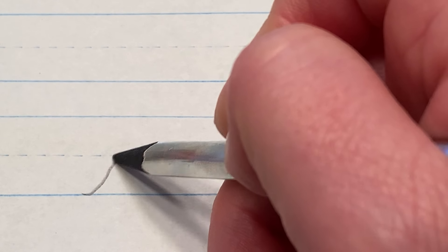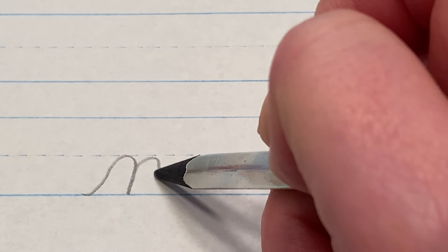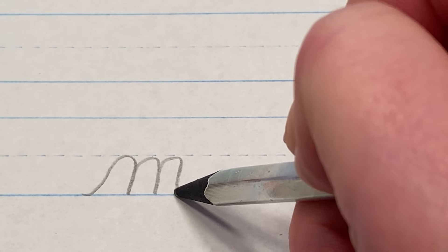Today we're going to work on lowercase cursive M. For this letter you start down at the floor, up to the middle, back down, follow up that same line, and back down, follow up that same line and connect.